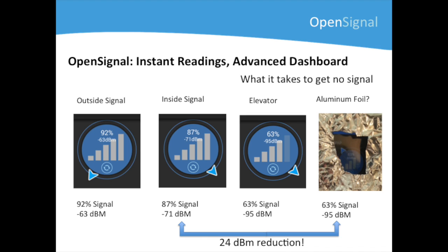If you remember, the second layer of OpenSignal was the advanced dashboard. We tried a very simple and fun activity to compare signal levels that involved walking in and out of our office, taking elevators, and going up and down the stairs. We observed a steady decrease in signal from being outdoors, inside a building, or in an elevator.